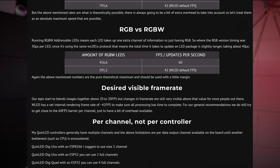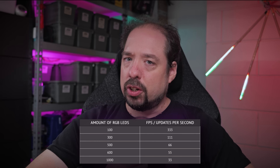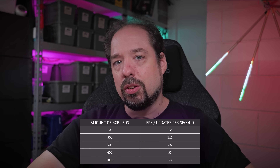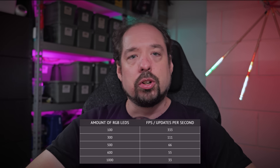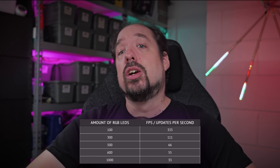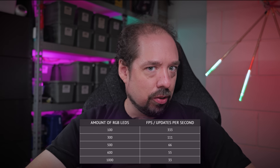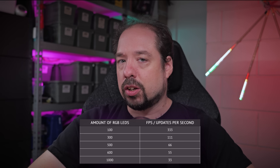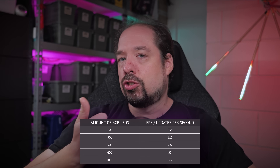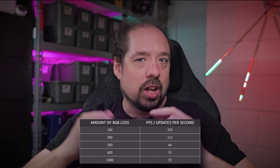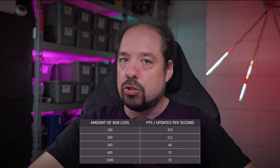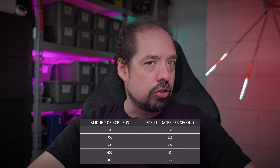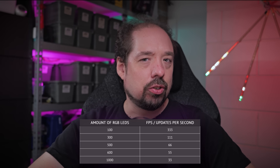This has implications for how many LEDs you can run with a single data channel. I have a comprehensive article about this, and in there we see a little table we can use to highlight the issue. If you have 100 LEDs on a single data channel, those LEDs can be updated 333 times per second — 333 FPS. That's quite good. But if we connect 1000 LEDs to that single data channel, we're only getting 33 updates per second, which can be considered slow and will be visible as stuttering animations and choppy transitions. You want a decent amount of FPS to make sure animations and transitions look nicely fluid and smooth.